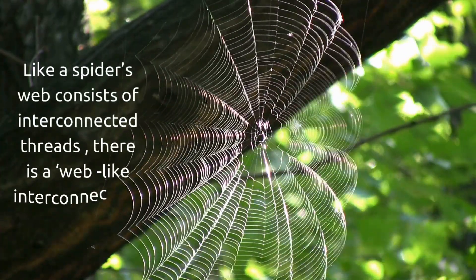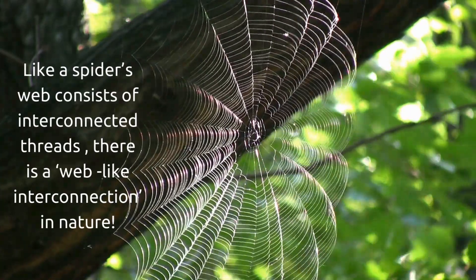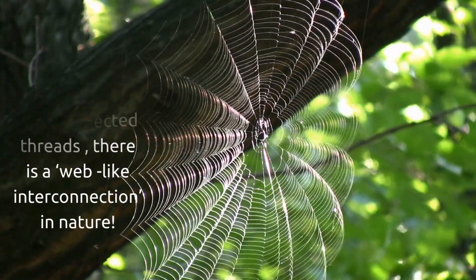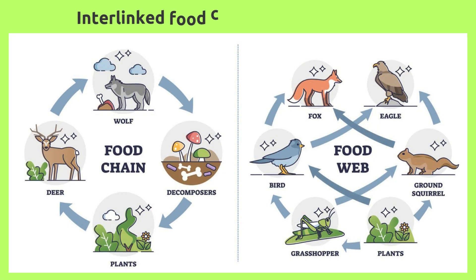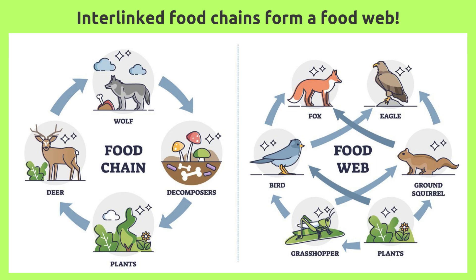Just like a spider's web consists of interconnected threads, there is a web-like interconnection in nature. On the left side you see a single food chain. On the right side you see multiple food chains which are interlinked. These interlinked food chains form a food web.